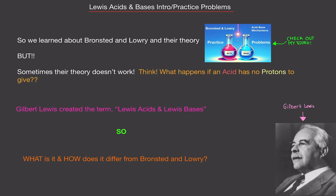Sometimes the Bronsted and Lowry mechanism does not work. What happens if an acid has no protons to give? Bronsted and Lowry stated that the acid donates protons, but there are acids in this world that don't have protons — they're still acids. That's where Bronsted and Lowry were stumped. So then comes Gilbert Lewis, who created the term Lewis acids and bases.